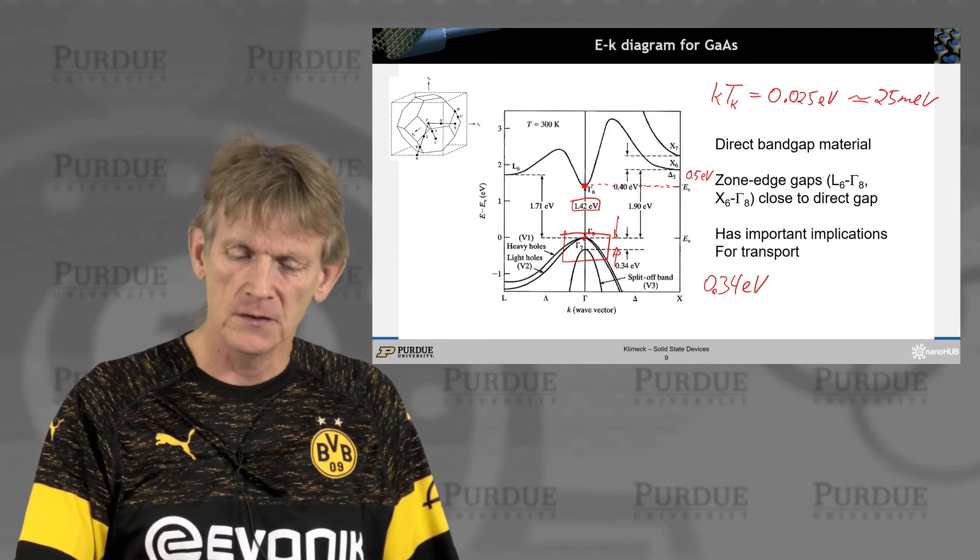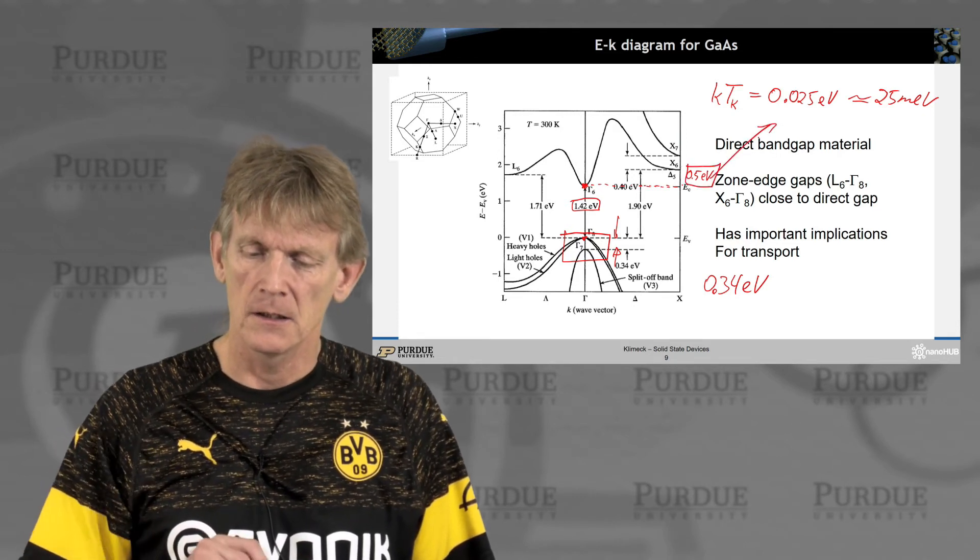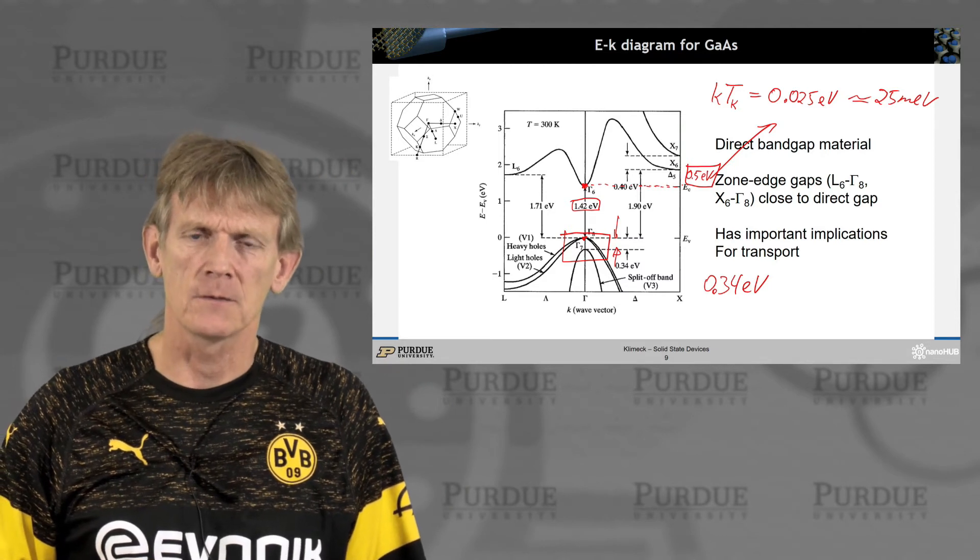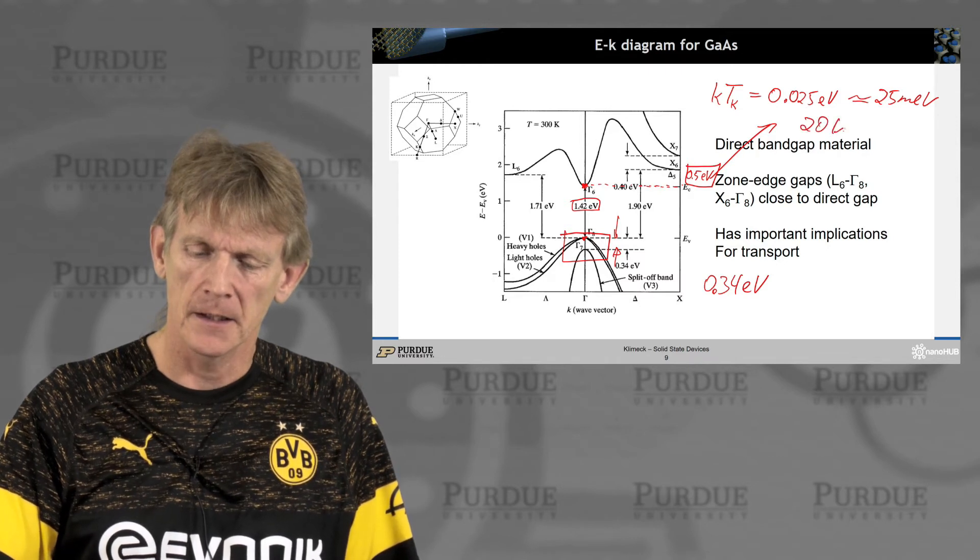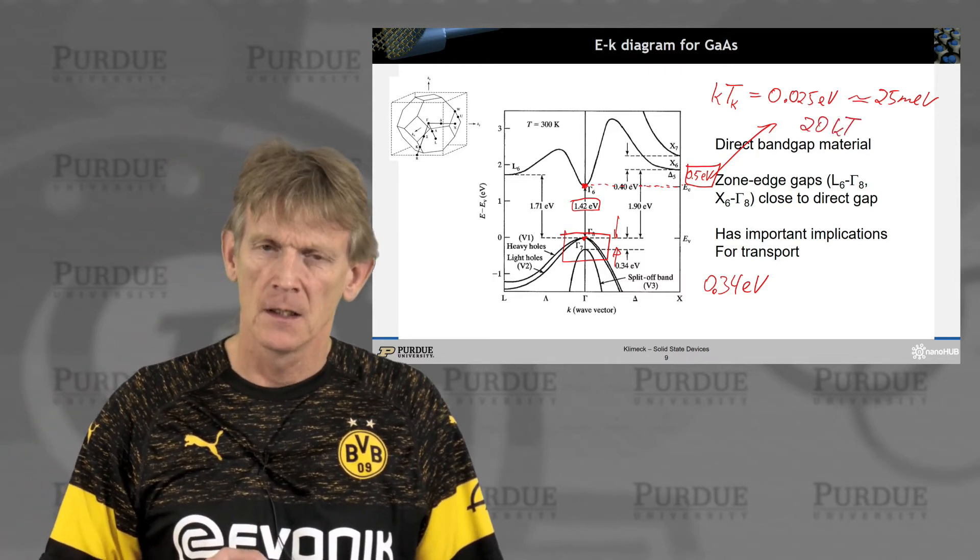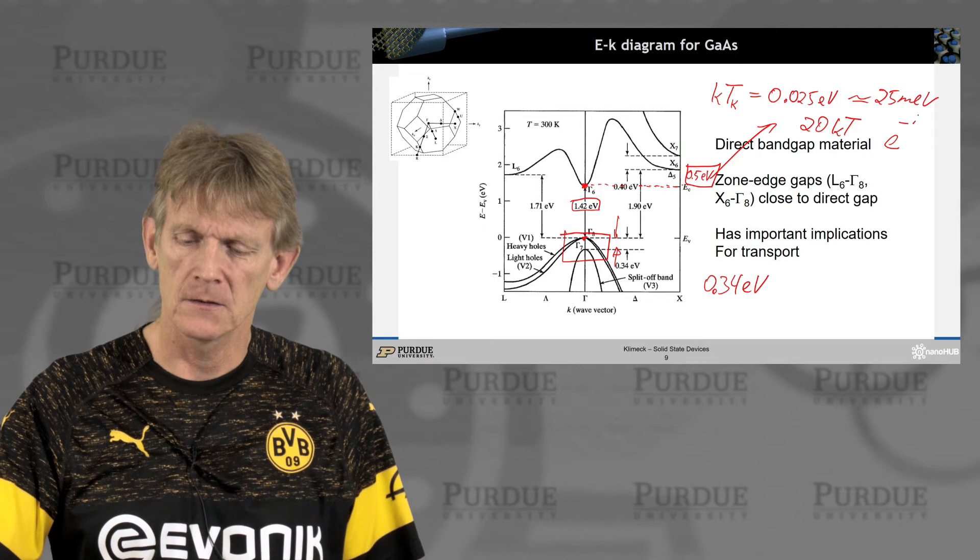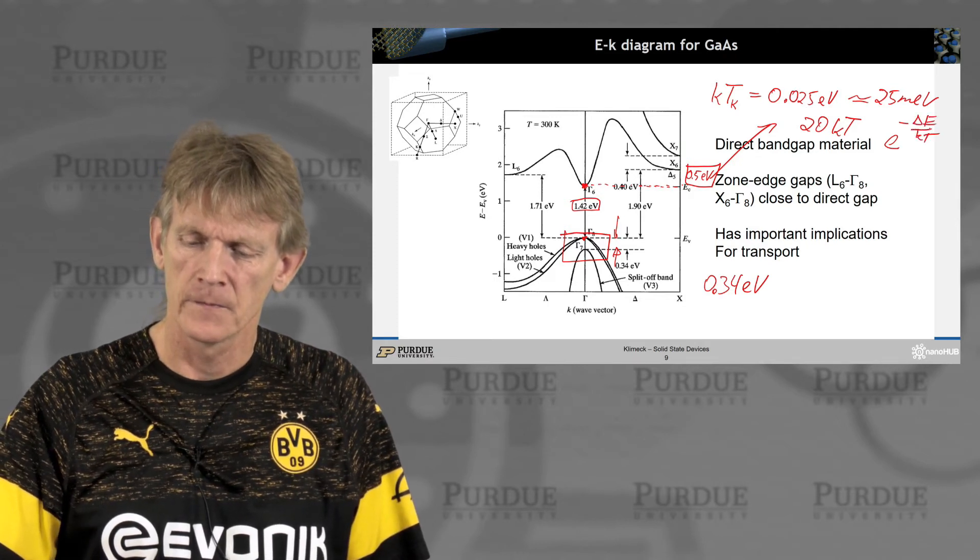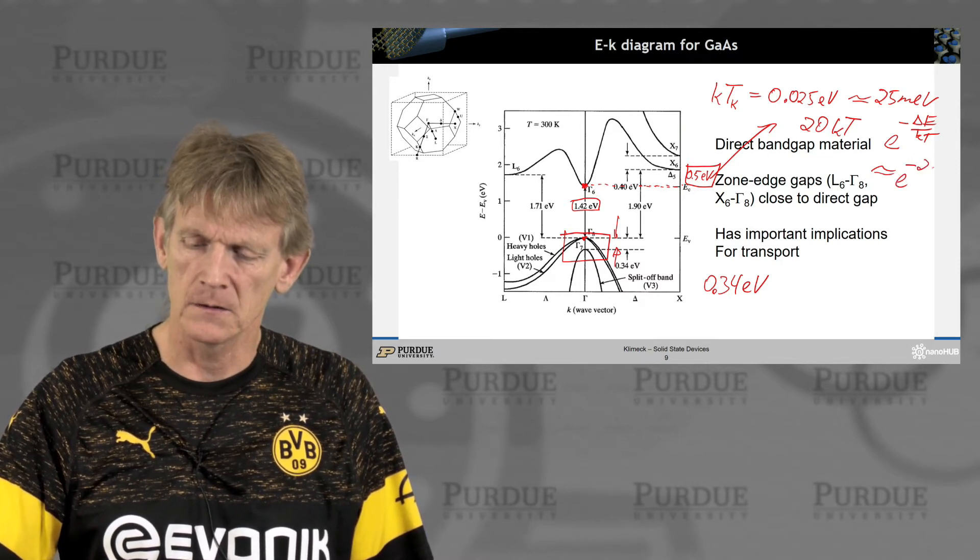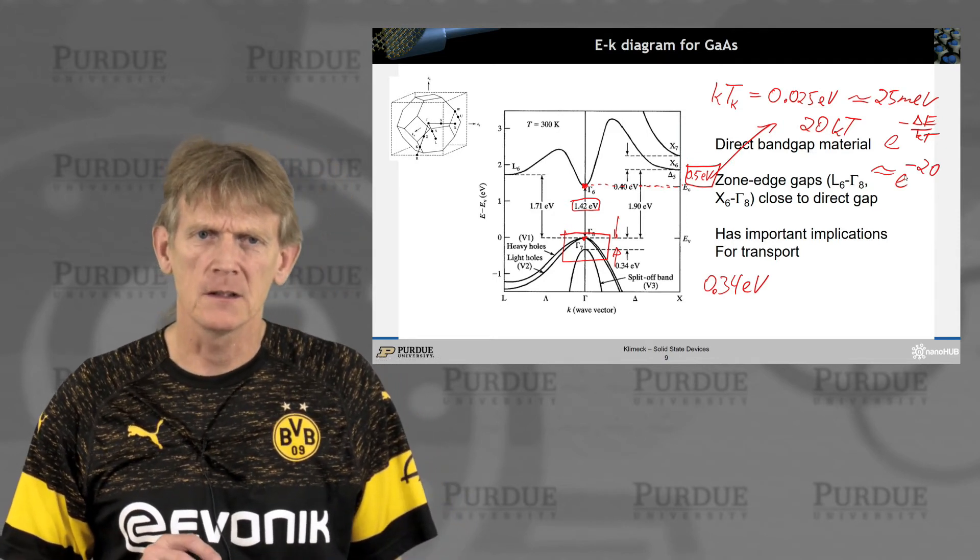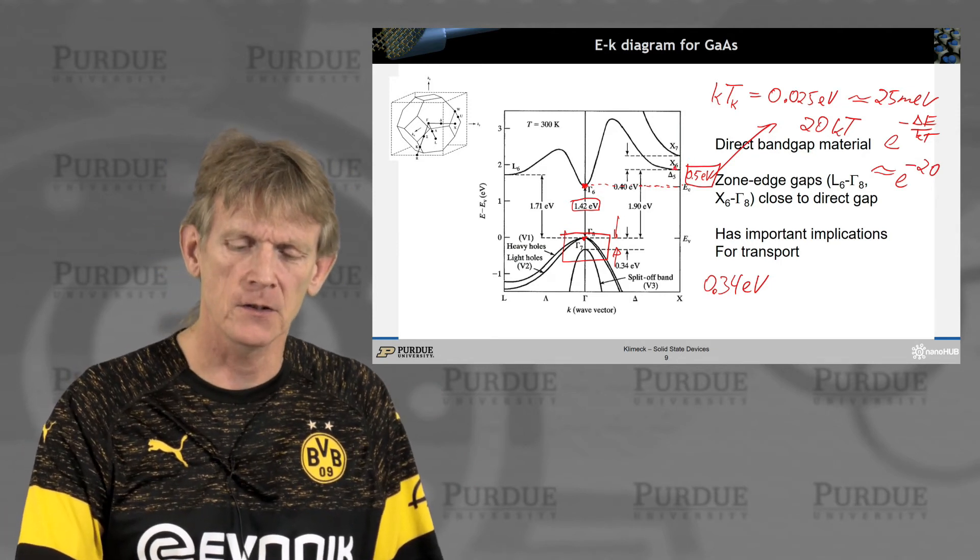So if I now consider an energy distance in a band structure as a multiple of thermal energy units, if I take this 0.5 eV, I have 20 kT of energy distance in there. If I consider a Boltzmann distribution of carriers of e to the minus delta E over kT, and we'll go more over that in the later part of the course, I get e to the minus 20. So e to the minus 20 is an insanely small number.